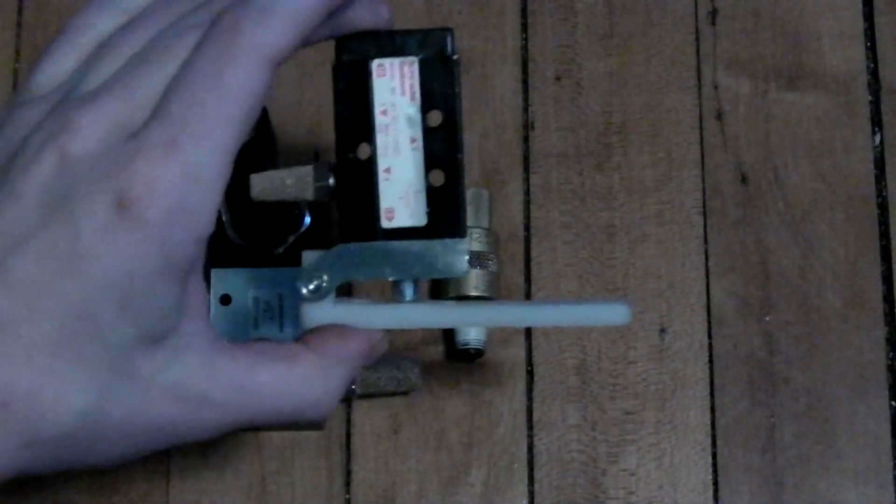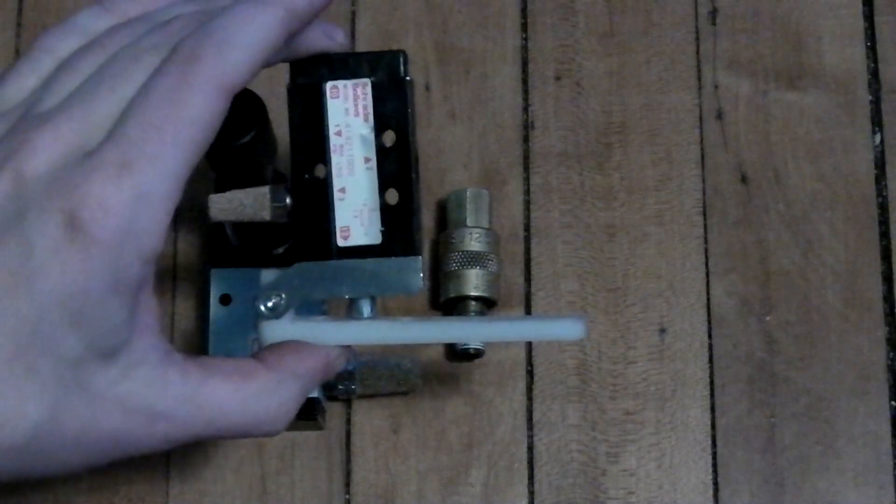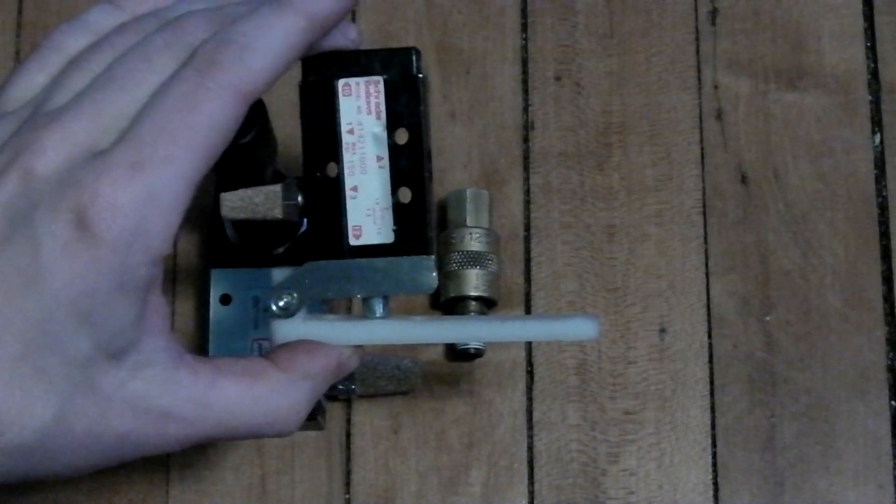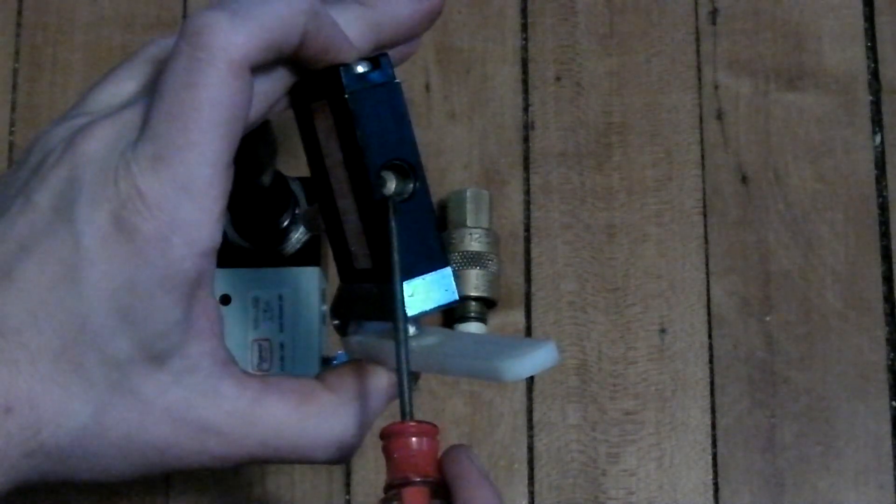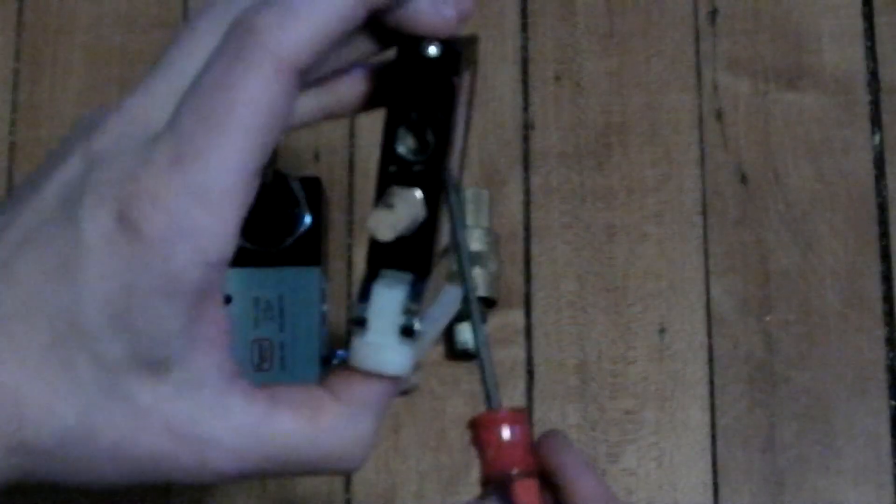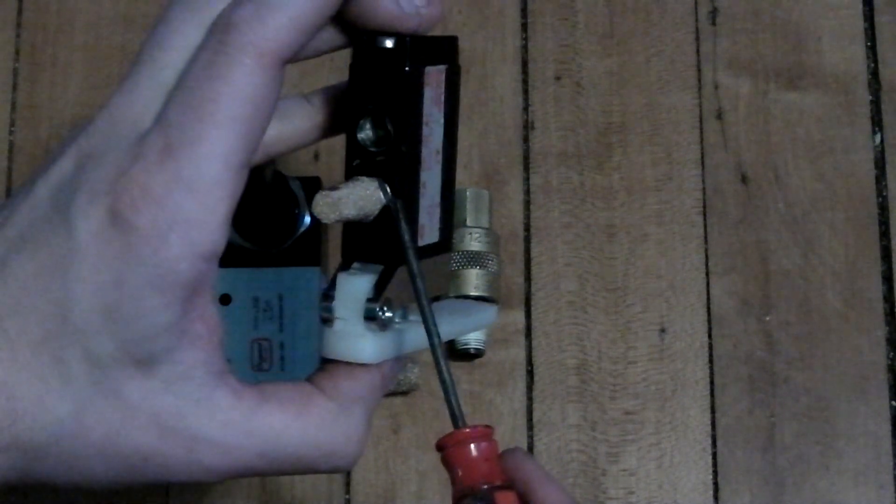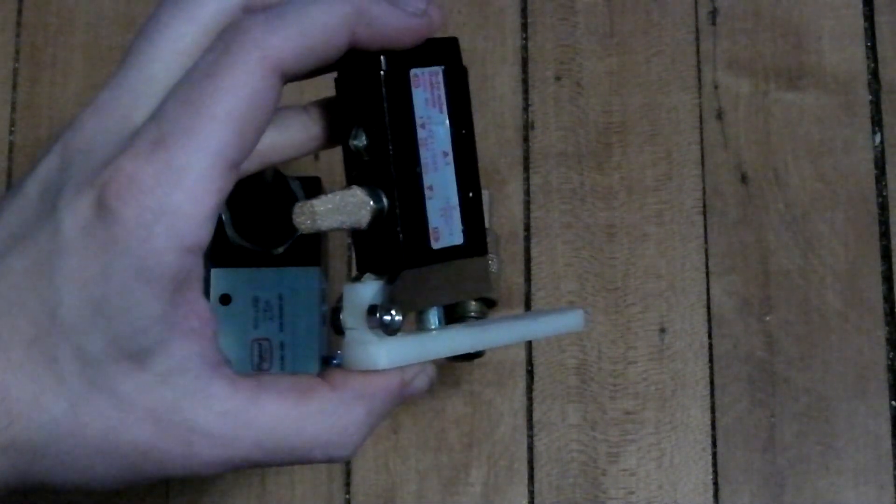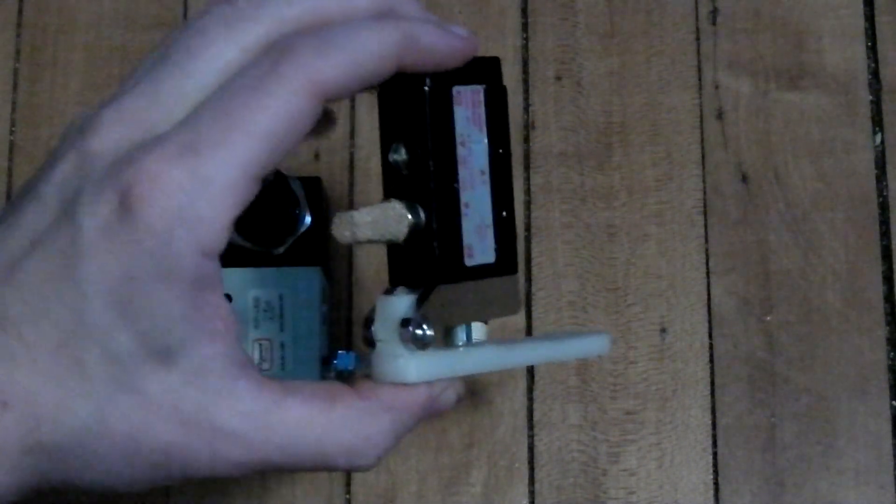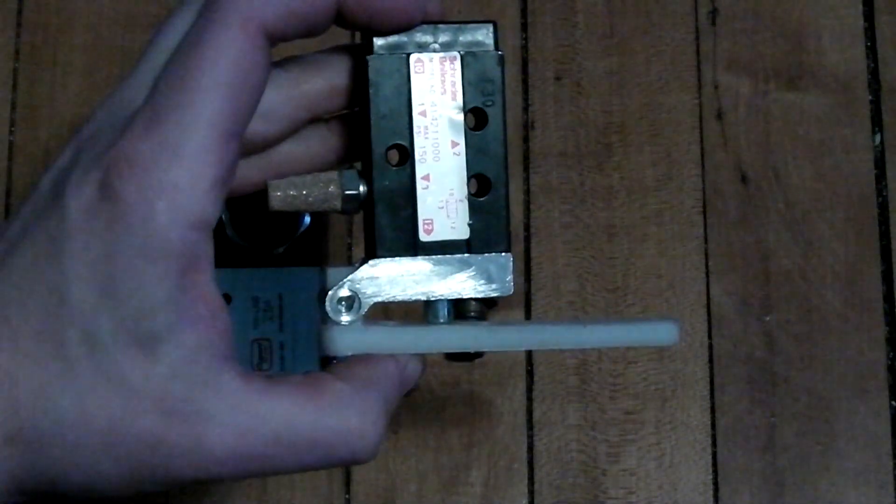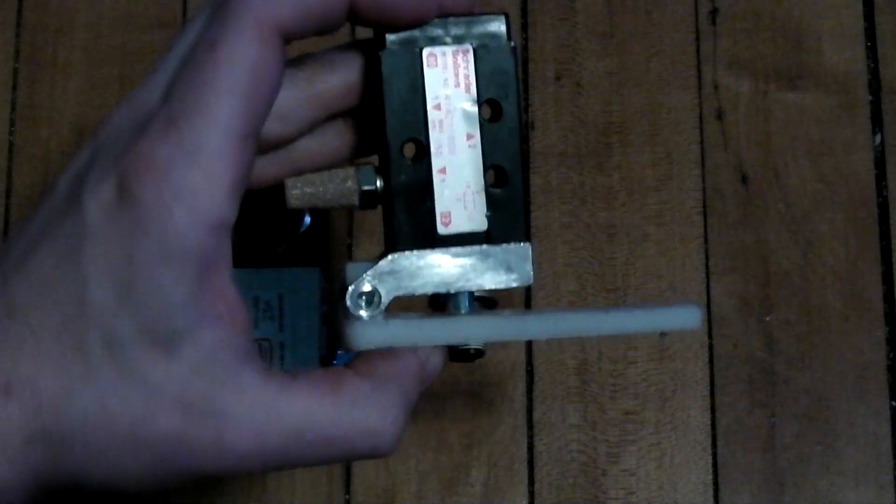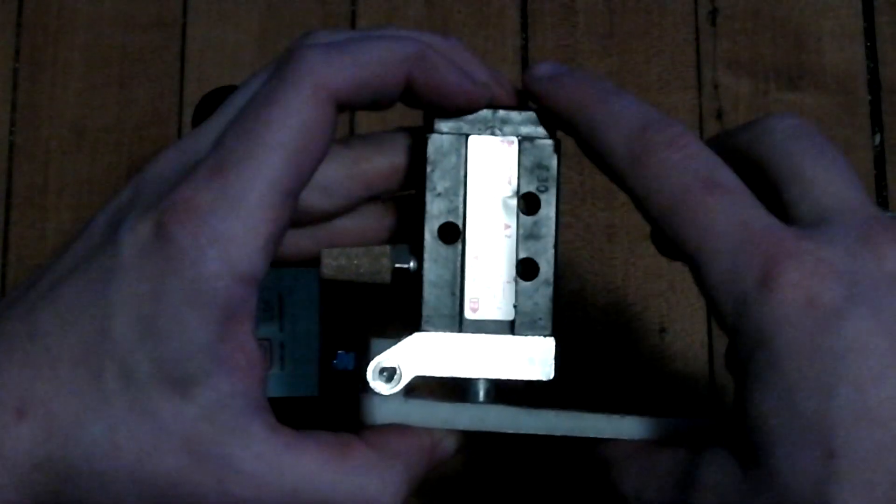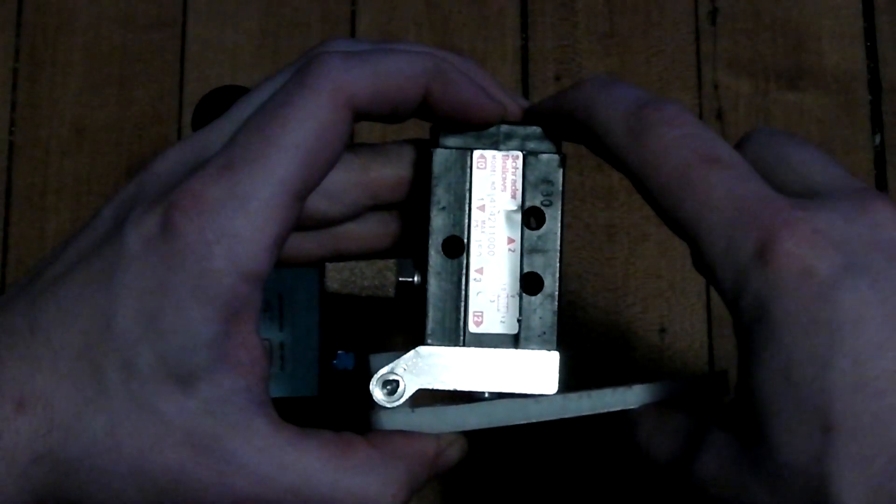So as I said before, two position and three ways. Pretty much what that means is there are three ports on this: here's one, here's two, and the third one is here. I have a silencer in it currently but there is a port there. That's your three ways. And then the two position just refers to the fact that right now it's in position one and when you depress the lever then it's in position two.